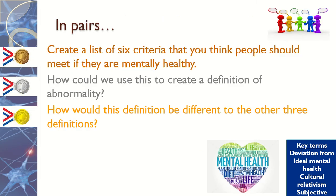You might want to think about creating a list of six criteria that you think people should meet if they are mentally healthy, and how could we use this to create a definition of abnormality? How would this definition be different from the other three definitions? So pause the video and have a think of six criteria that you could come up with.